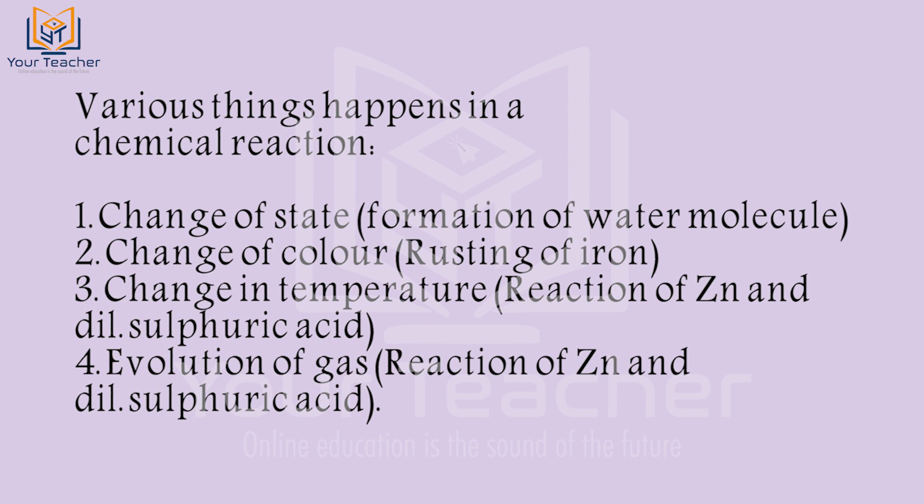The second indicator is a change of color. For example, rusting of iron: iron reacts with oxygen in the atmosphere, and a brownish-colored iron oxide forms on the surface. This is a chemical change.